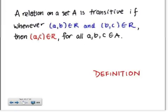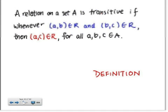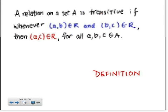A relation on set A is transitive if whenever (A, B) is in the relation and (B, C) is in the relation, then (A, C) is also in the relation, for all A, B, and C in A.